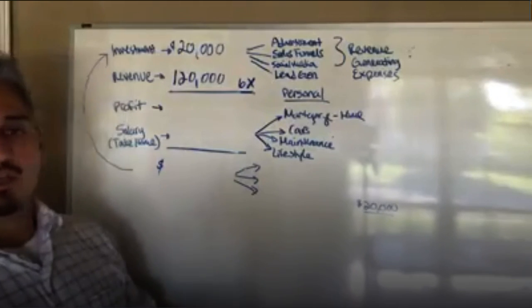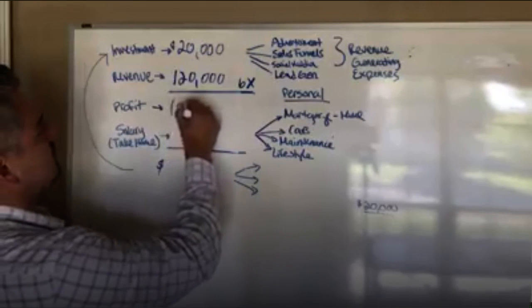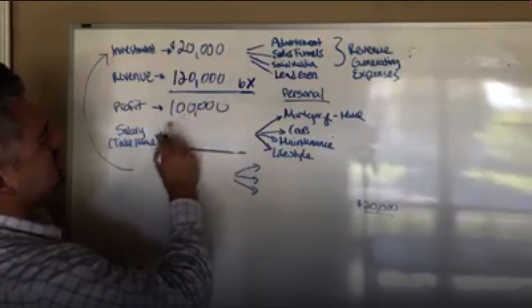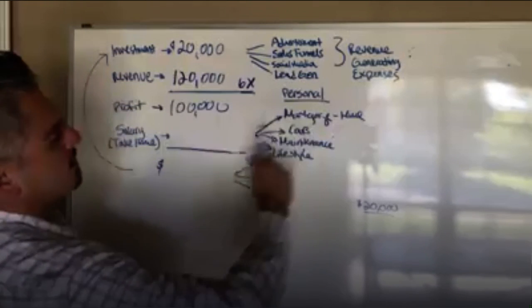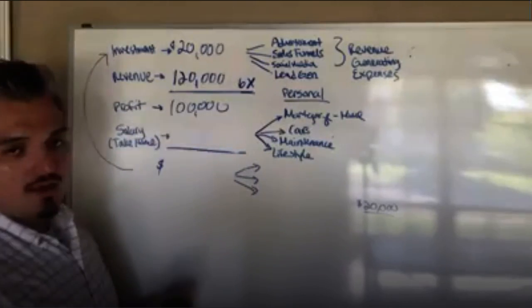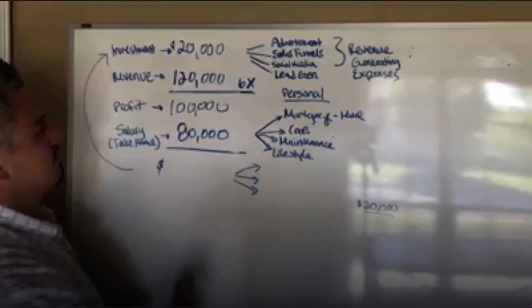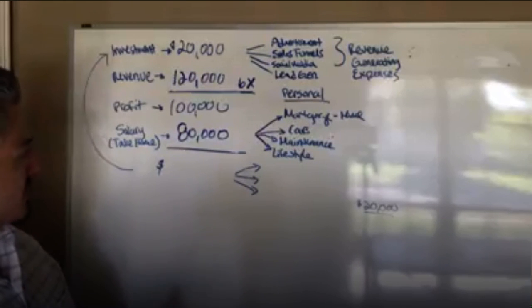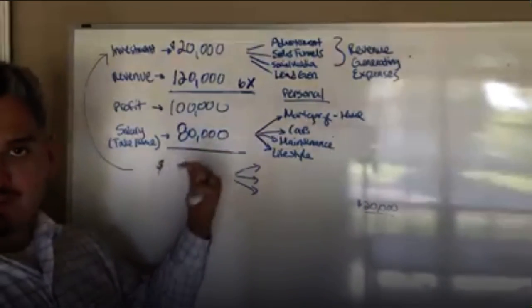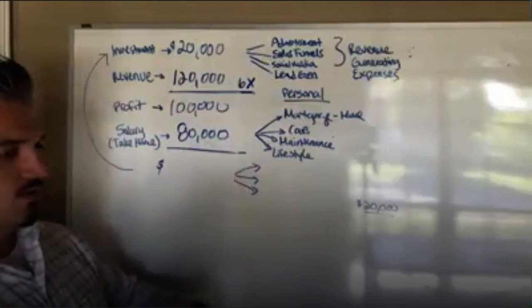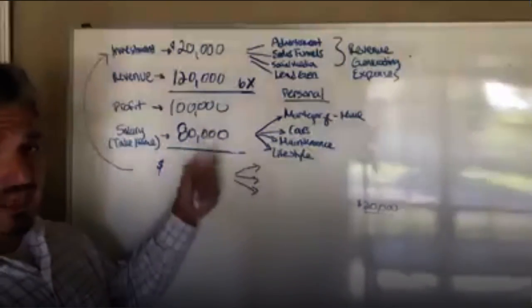And you've been doing this year after year. So that profits you $100,000 because your revenue generating expenses are $20,000. But in this case, your living expenses is $80,000, meaning the $80,000 you're actually taking home as a salary, or that's what you're taking out of the business every month or every quarter, however you're budgeting or working your finances.